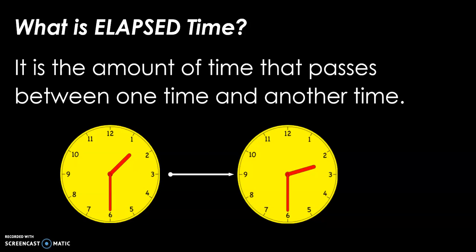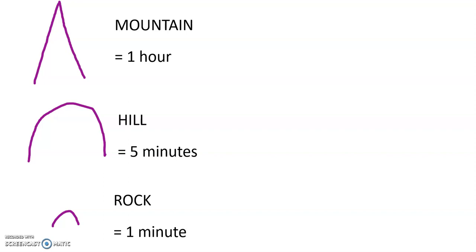Hi guys, today we are going to spend some more time learning about elapsed time. To review, elapsed time is the amount of time that passes between one time and another time. In our previous lesson, we learned how to use a number line to calculate elapsed time, and we represented the jumps on our number line with symbols: an hour could be represented by a mountain, increments of five minutes could be represented by hills, and increments of one minute could be represented by rocks. This is a good visual strategy so you can keep track of your jumps and know the difference between an hour and a minute.